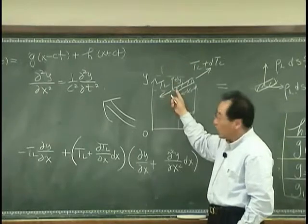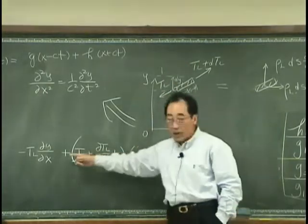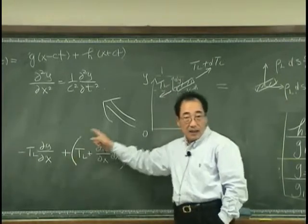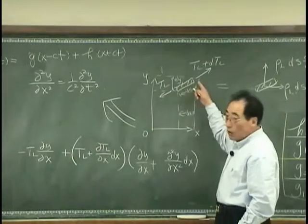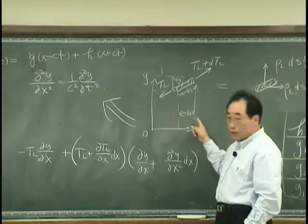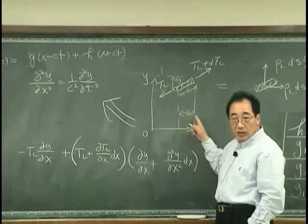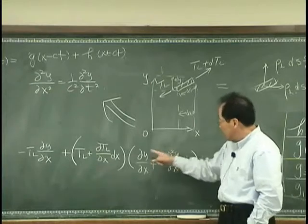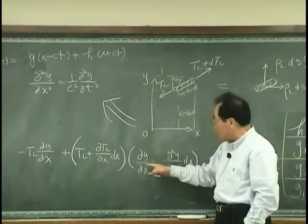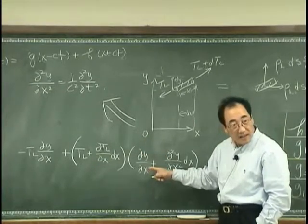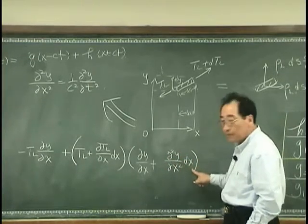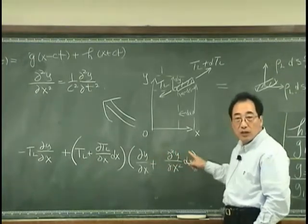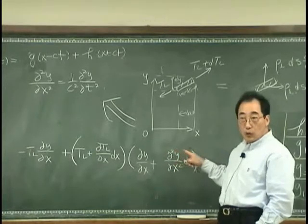Okay, slope over here, that is dy dx. And what about the slope over here when we have incremental increase dx? That is dy dx plus d dy dx. So that is d square y dx dx dx, the incremental increase of the slope.